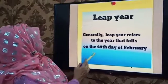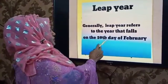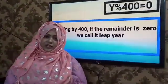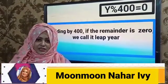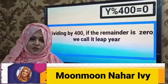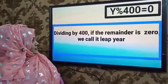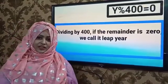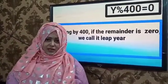Generally, a leap year refers to the year that has the 29th day of February. How do we know if a year is a leap year? There are two ways. The first way: dividing by 400 — if the remainder is 0, we call it a leap year.